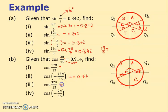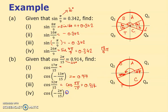For cos(32π/15): 30π/15 = 2π, a full turn, so this is the same as cos(2π/15) = 0.914. For cos(−2π/15): with cosine, going negative doesn't matter — cos is symmetric, so cos(−2π/15) = cos(2π/15) = 0.914.